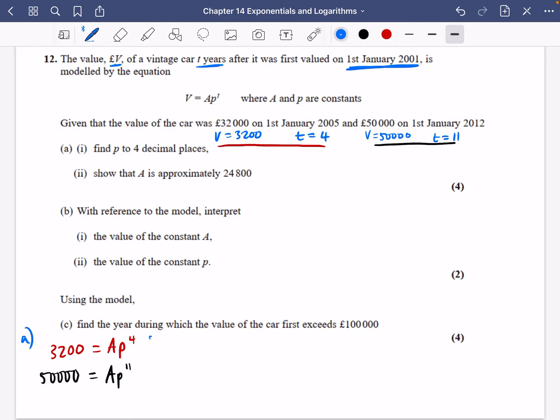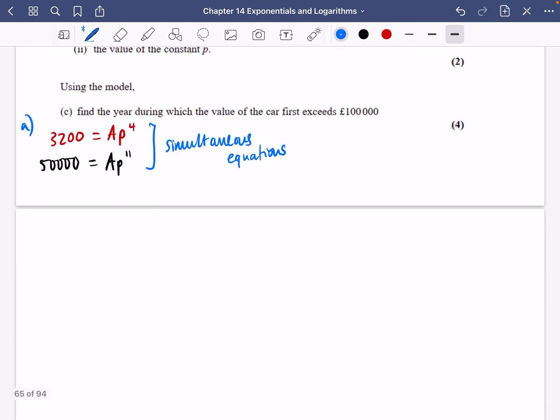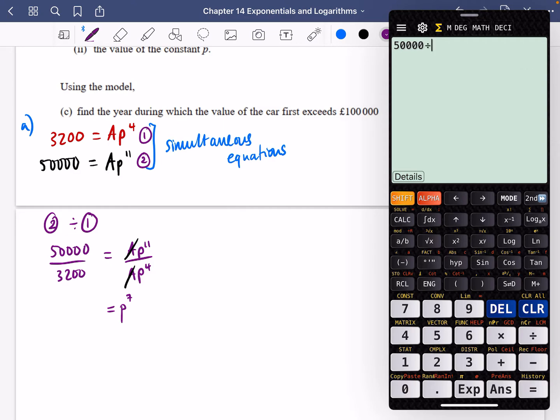This is actually simultaneous equations. I'm going to divide equation 2 by equation 1. The left side is 50,000 divided by 32,000. The right side is AP^11 divided by AP^4. The A's cancel and the right side simplifies to P^7. The left side is 15.625.